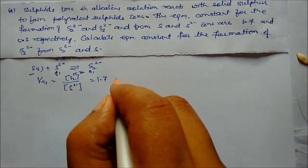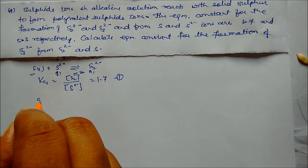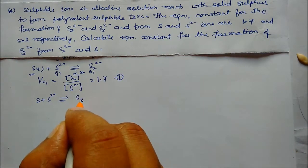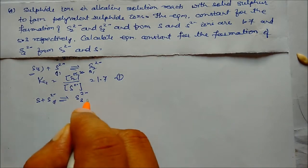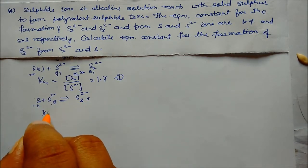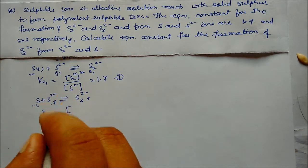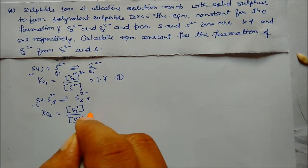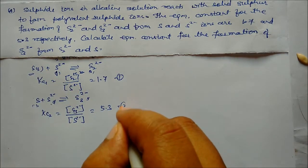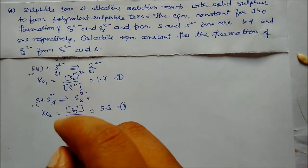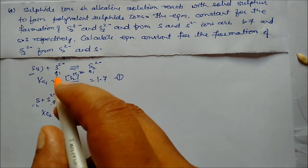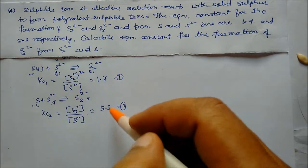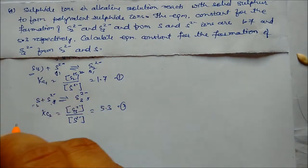Equation 2 is S (solid) + S₂²⁻ ⇌ S₃²⁻, with Kc2 = [S₃²⁻]/[S₂²⁻] = 5.3. To find the equilibrium constant for S + S²⁻ ⇌ S₃²⁻, we subtract equation 1 from equation 2, which cancels the S₂²⁻ intermediate.